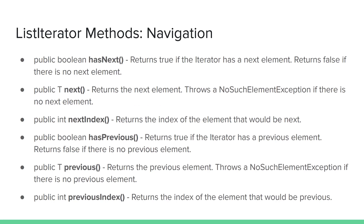Navigation methods include the familiar hasNext and next from a basic iterator, and these methods work exactly the same as expected. We also have the ability to move in the reverse direction. Corresponding with hasNext and next, we have hasPrevious and previous.